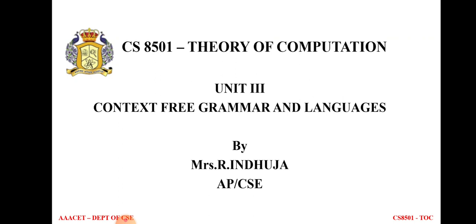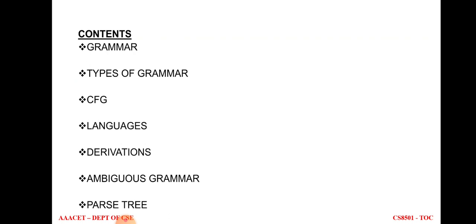In this lecture we are going to see the concepts of Unit 3. Unit 3 title is 'Context Free Grammar and Languages.' We already know what a language is — it is a set of strings. In this unit we will see what is grammar and what is context free grammar. The topics to be discussed are: grammar, types of grammar, CFG languages, derivations, ambiguous grammar, and parse trees.